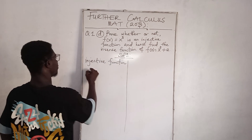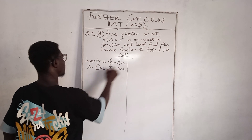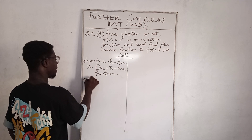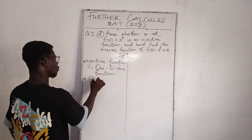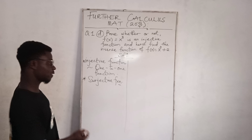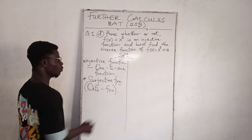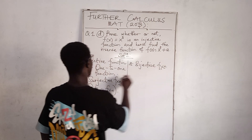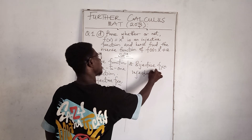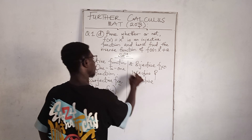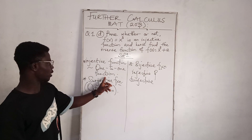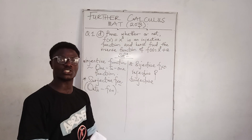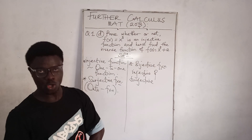Injective function means one-to-one function. Another name for one-to-one function is injective function. Then we have surjective function, which means onto function. Then we have bijective function, which deals with both injective and surjective — meaning both one-to-one function and onto function.